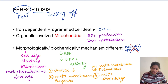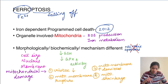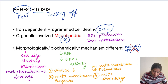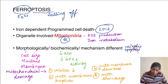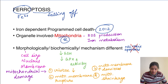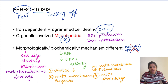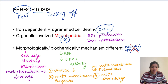Ferroptosis was very recently identified, in 2012. The most important organelle involved is the mitochondria. Incomplete oxidation leads to free radical formation, and iron metabolism also takes place mainly in the mitochondria. Both of these causes lead to mitochondrial damage — it is the mitochondria which gets damaged in ferroptosis.